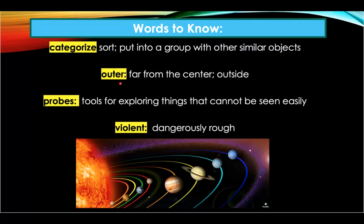Our next word to listen for in our story is 'outer.' Outer means far from the center, outside. An example: the outer part of the earth's surface is the part we live on.